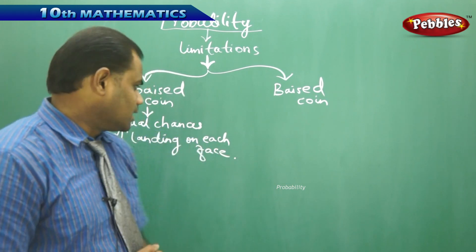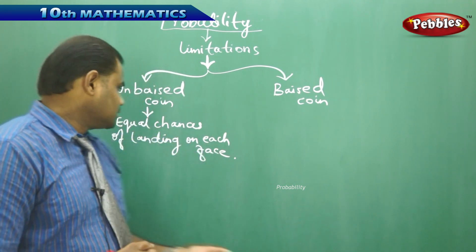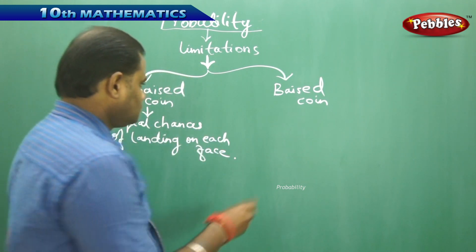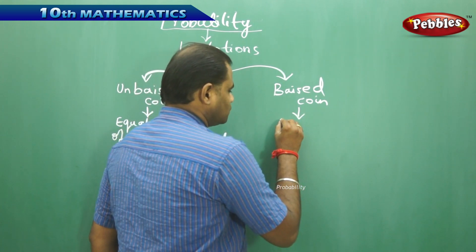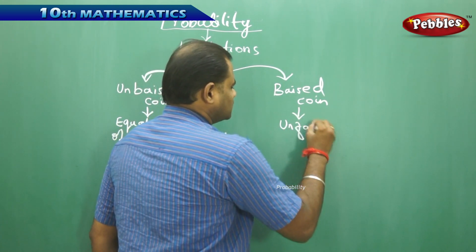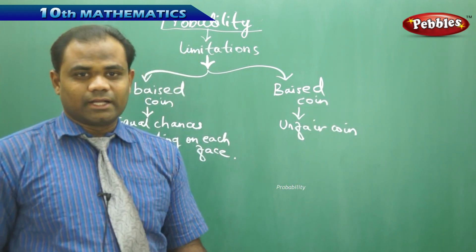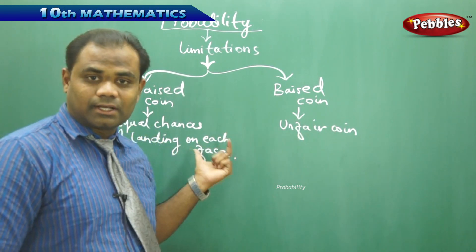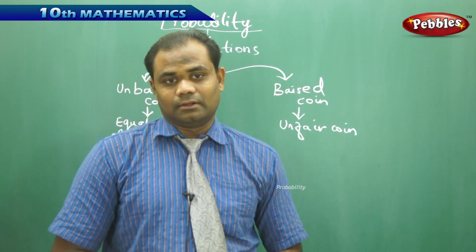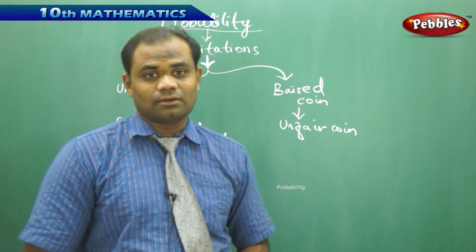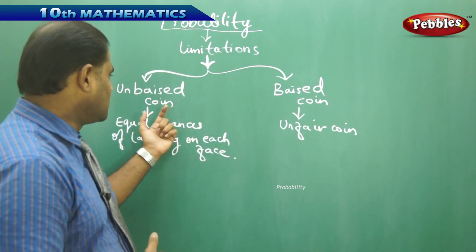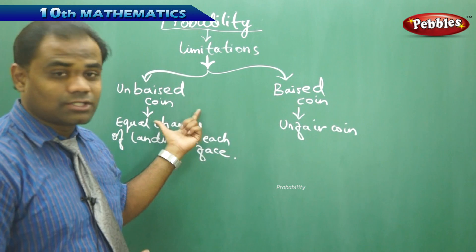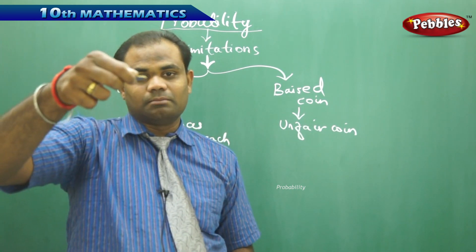In probability, we always take equal or fair chances of landing on each side — that is, we use unbiased coins or unbiased dice. A biased coin has unequal chances of landing, where one side might be bulged or raised and the other side flat. This is how we differentiate between biased and unbiased coins. In probability, it is very important to determine whether a chosen coin or dice is biased or unbiased — if biased, we do not take it into consideration; if unbiased, we do.